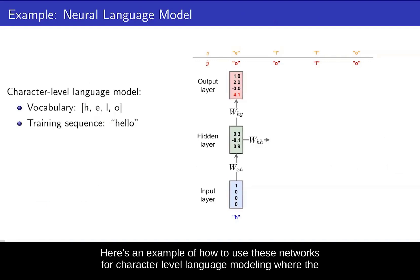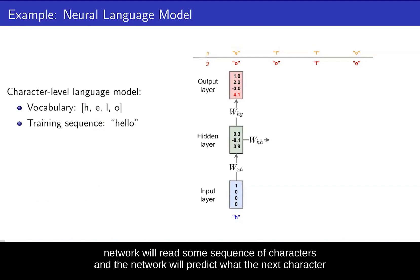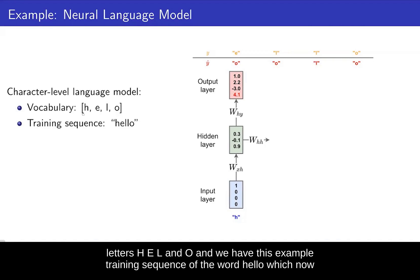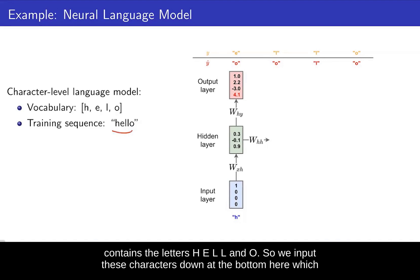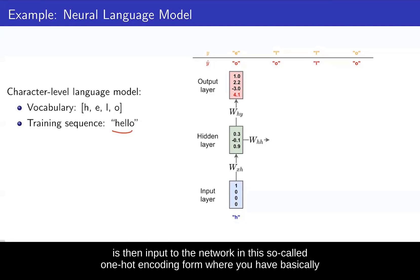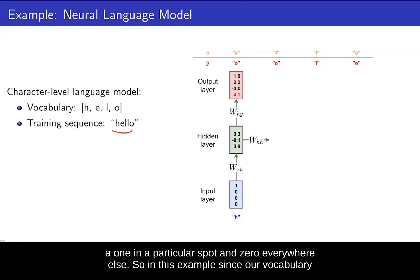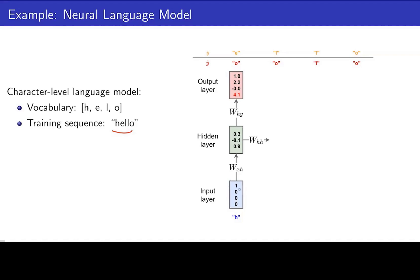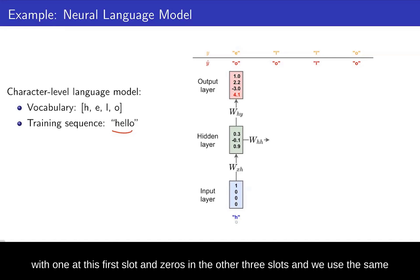Here is an example of how to use these networks for character-level language modeling, where the network reads a sequence of characters and predicts what the next character will be. Let's assume a small vocabulary of four letters: H, E, L, and O, with the training sequence being the word 'Hello.' We input these characters in so-called one-hot encoding form, where you have a one in a particular spot and zeros everywhere else. Since the vocabulary has four letters, H is represented by a vector with one in the first slot and zeros in the other three slots, and the same pattern is used for all letters.